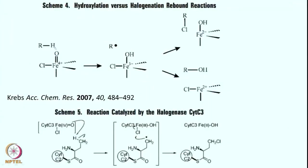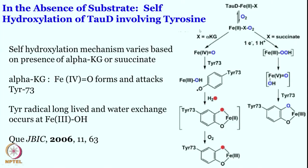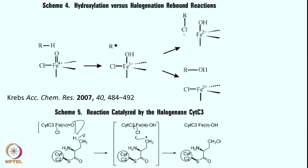From the iron-oxo, R-H undergoes hydrogen atom abstraction to give hydroxo and R•. Now this R• is not going to rebound with the hydroxo; instead, R• is going to react with the halide to give the halogenated product. That is quite phenomenal, because this hydroxylation is quite challenging in these cases — exclusive halogenation was happening in the halogenase, while the other case gives only hydroxylation.